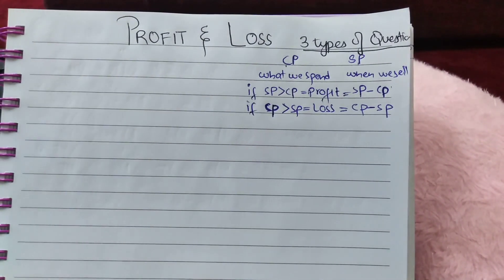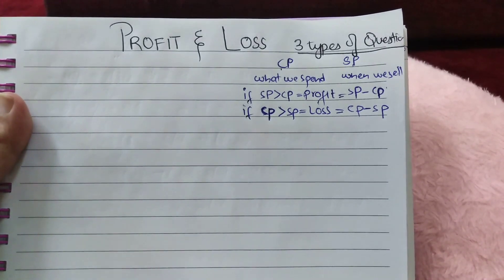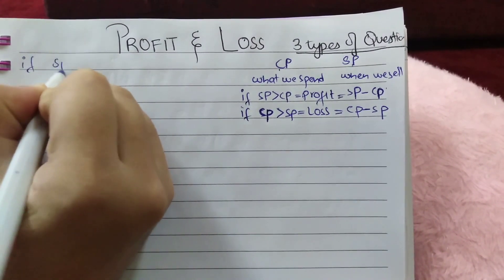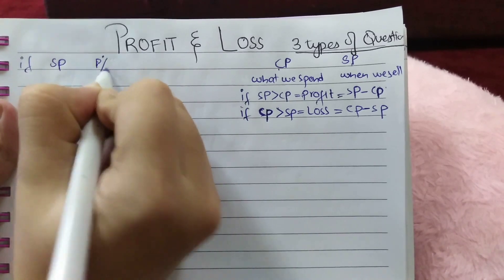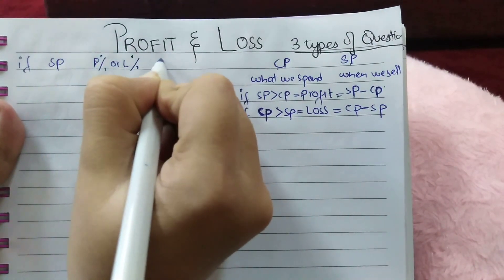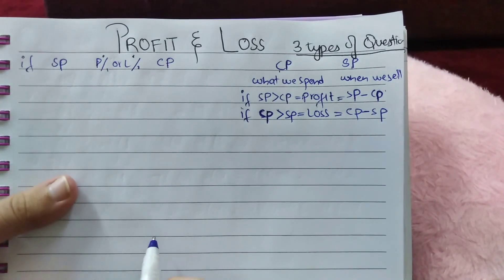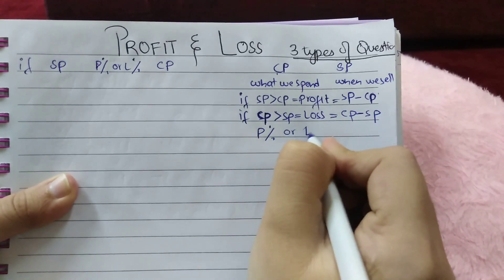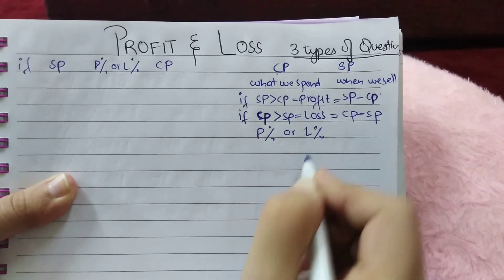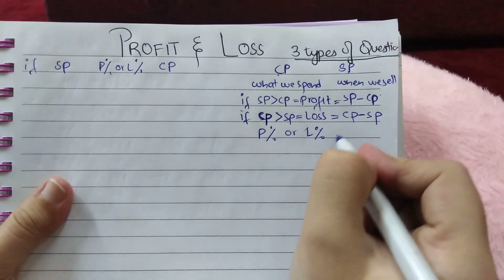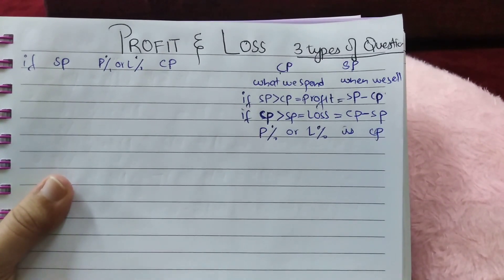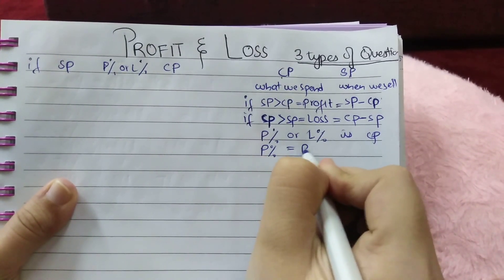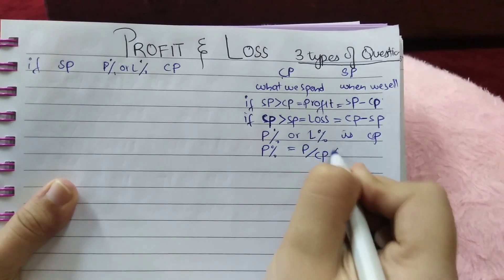The first question type is: if sale price is given and profit percent or loss percent is given, you have to find cost price. To solve these questions, must remember: profit or loss percentage is always calculated on cost price. Profit percentage equals profit divided by cost price, multiplied by 100.